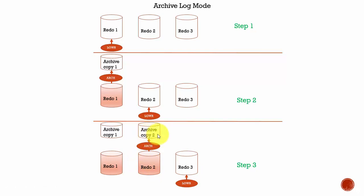That means a copy of every redo file is maintained in the archive — every redo file is archived. That means you are backing up all the redo log files. In case you need to recover the database, you can use these archived copies. For example, if you took a backup seven days ago and today the database crashed, since the database is running in archive log mode, you can take that seven-day-old backup and apply all the changes recorded in the archive log files so that your database can be current. By maintaining archival copies of the redo files, you can recover the database to the most current state.